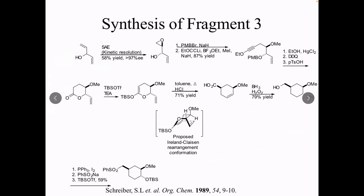For the third fragment, this is only the second asymmetric reaction done in the whole synthesis — everything else is based on preexisting stereocenters. They did a Sharpless asymmetric epoxidation, which we talked about when we discussed 1,2-interactions and 1,3-interactions, followed by kinetic resolution of the two enantiomers. The enantiomer they kept was 97% ee, 58% yield — which is not bad.